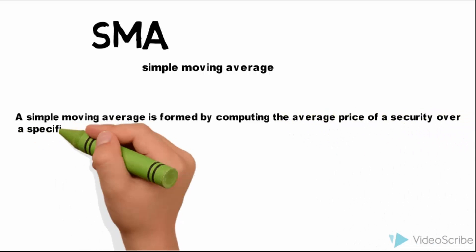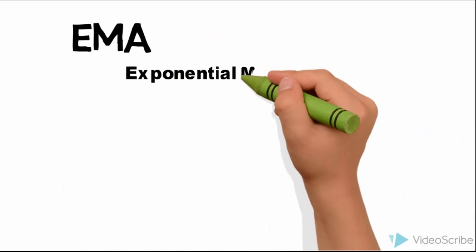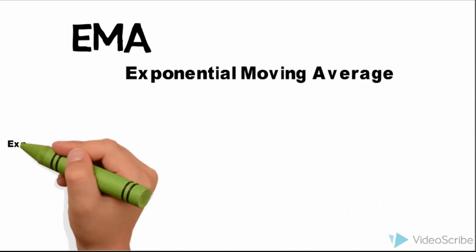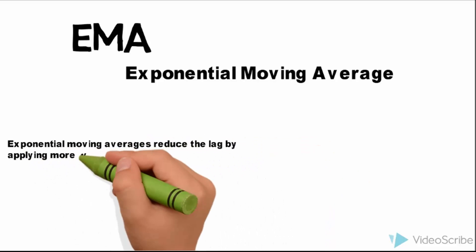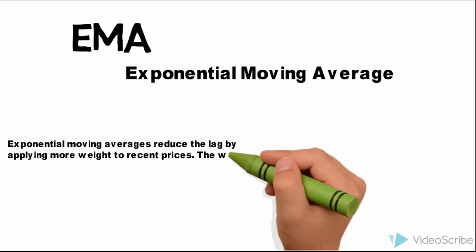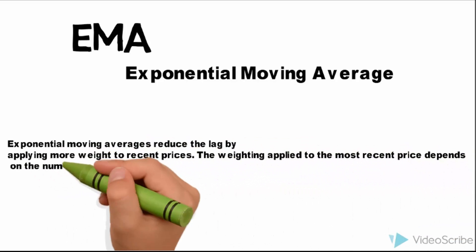EMA, exponential moving average. Exponential moving average reduces the lag by applying more weight to recent prices. The weighting applied to the most recent price depends on the number of periods in the moving average.